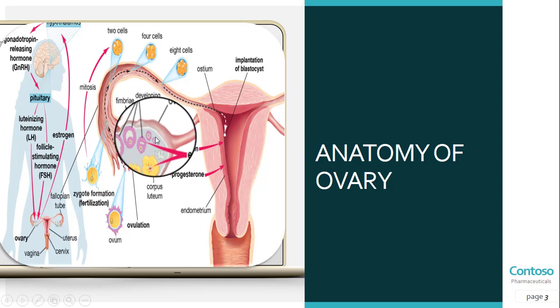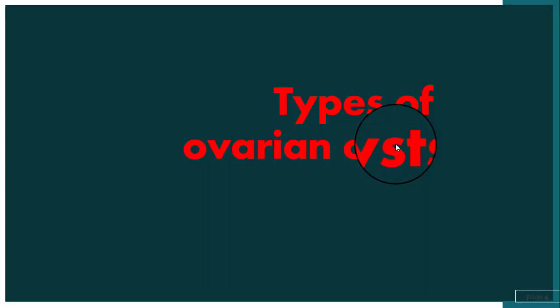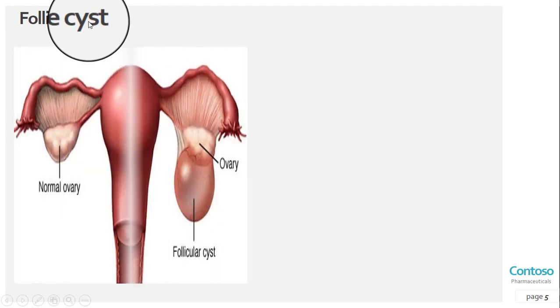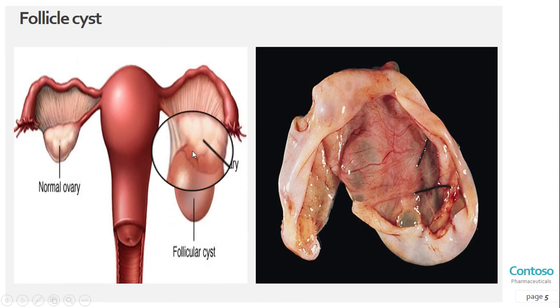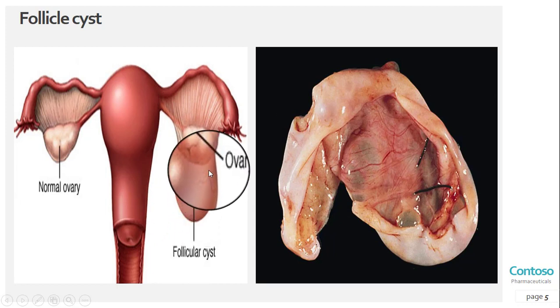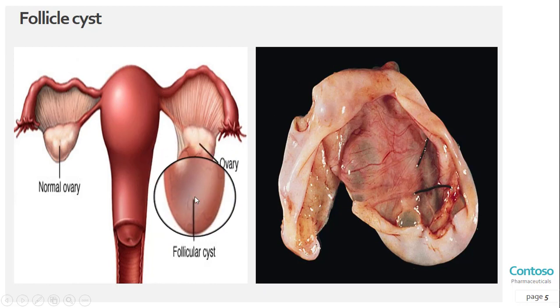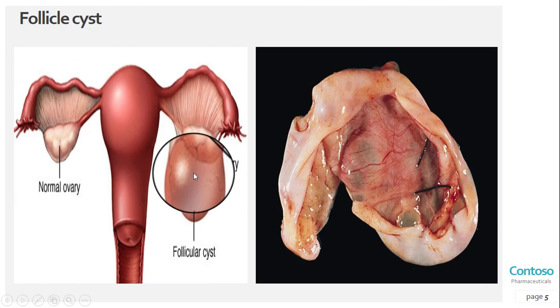There are various types of ovarian cysts, such as dermoid cysts and endometrioma cysts. However, functional cysts are the most common type. The two types of functional cysts include follicle cysts and corpus luteum cysts. For follicular cysts: during a woman's menstrual cycle, an egg grows in a sac called a follicle located inside the ovaries. In most cases this follicle breaks open and releases an egg.